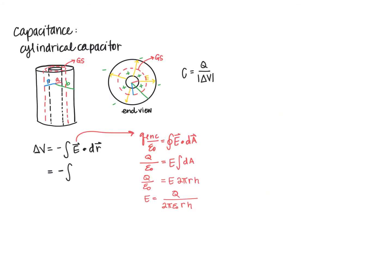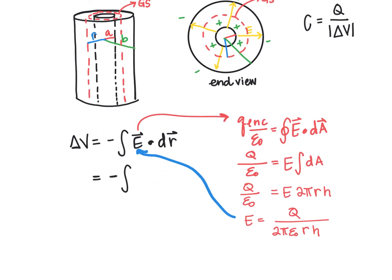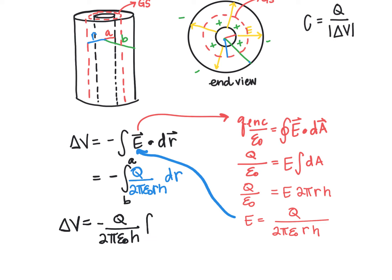Now we have an electric field value to substitute back into our potential difference equation. We have q over 2π epsilon naught r h times dr. The electric field and the position change are parallel, so the dot product equals the product of their magnitudes. We evaluate this from b to a, going from low potential to high potential. Pulling out the constants q over 2π epsilon naught h, we integrate from b to a of 1 over r dr.